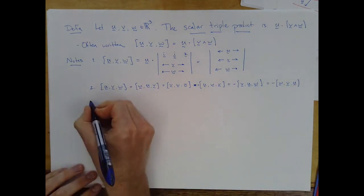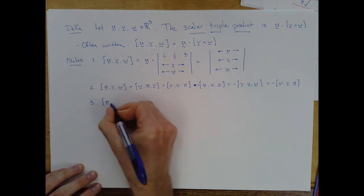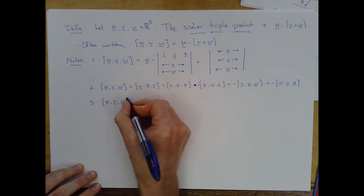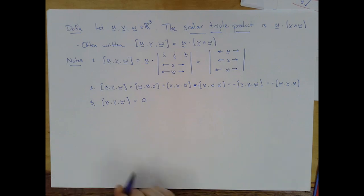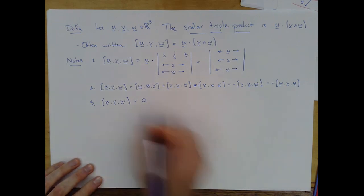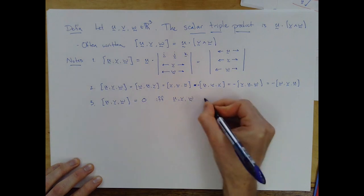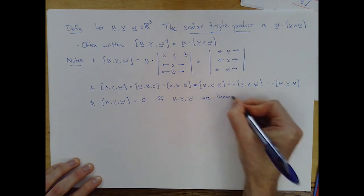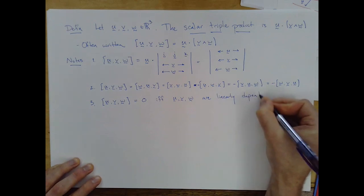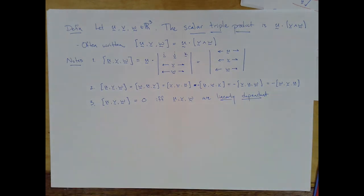Okay, statement number three is quite an important concept, which is to think about when this triple product is zero. The statement is that this is true if and only if u v w are linearly dependent. Now, I don't know if you've encountered a formal definition of this yet in the linear algebra course. You certainly will. We've hinted at the idea of linear dependence and independence a couple times in this course.